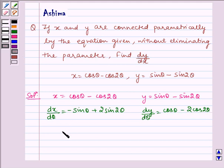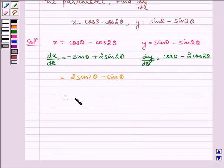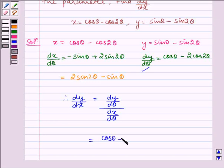dx/dθ can be written as 2 sin 2θ - sin θ. Therefore, dy/dx = (dy/dθ)/(dx/dθ), which equals (cos θ - 2 cos 2θ)/(2 sin 2θ - sin θ).